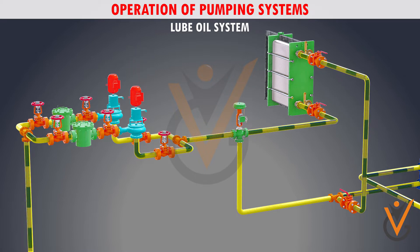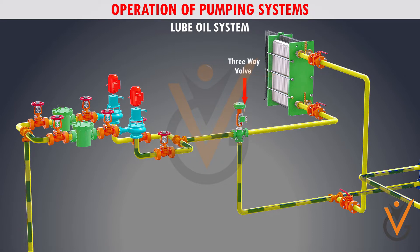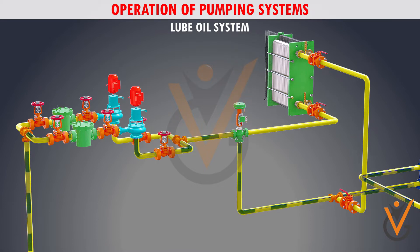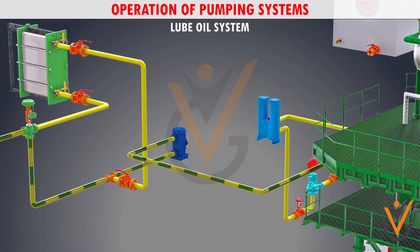The plate type or shell and tube type lube oil cooler is cooled from the low temperature central cooling freshwater system. The lube oil supplied to the cooler is via a three-way valve which enables some oil to bypass the cooler. This helps the three-way valve maintain a temperature of around 45 degrees centigrade at the lubricating oil inlet to the engine.